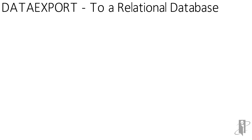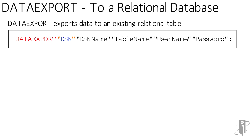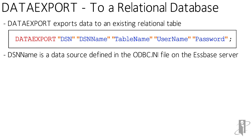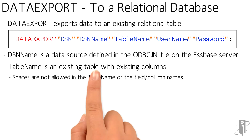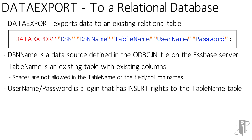To use data export to export data to an existing relational table — and the keyword there is existing — we simply say at the beginning: DSN (that's for data source name), then we give it an actual data source name, the table within that data source name, our username, and our password. A DSN name is something that must be defined in the ODBC.ini file on the S-Space server. Table name is an existing table with existing columns. We can't have a space in the table name or in the field column names — it freaks out when it sees that. Username and password is a login that has insert rights to whatever that table name actually is.